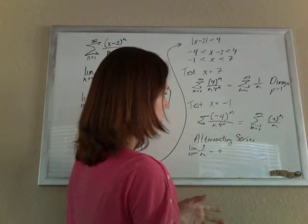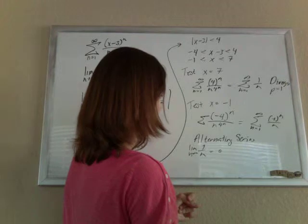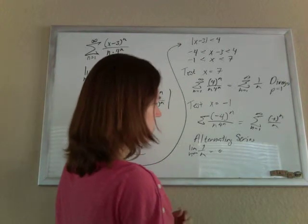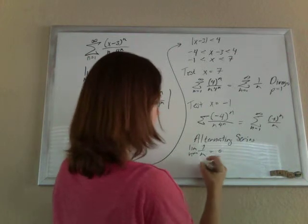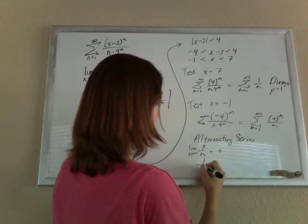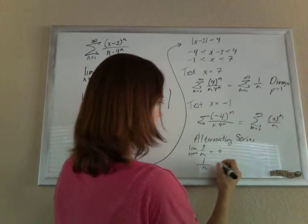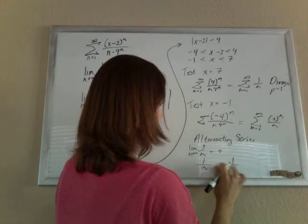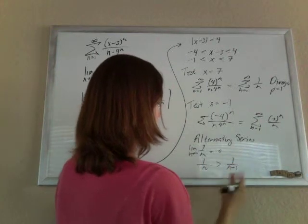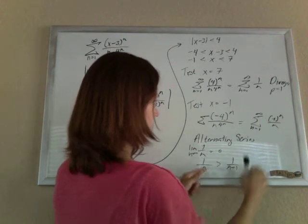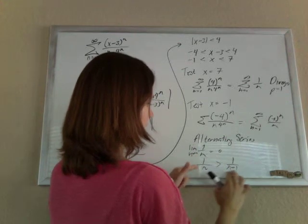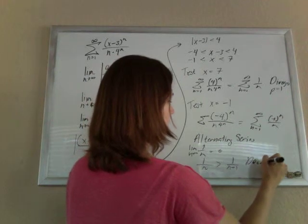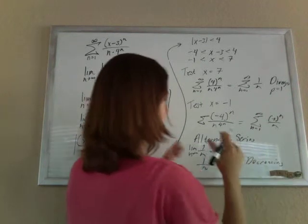Then, what do we want to say, and it's decreasing, I think we have to say. So we need to know that 1 over n is greater than 1 over n plus 1, so this term is bigger than that term. So if you plug in an n and an n plus 1, you can tell your series is decreasing.